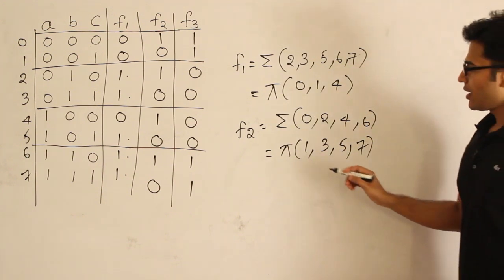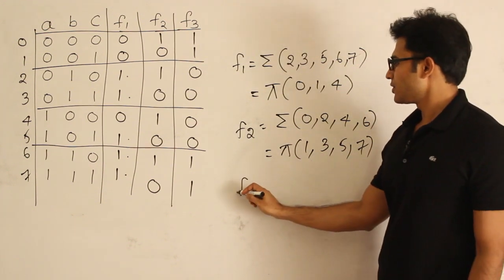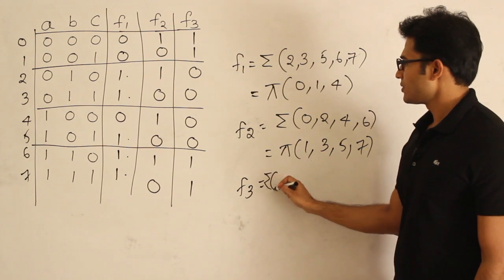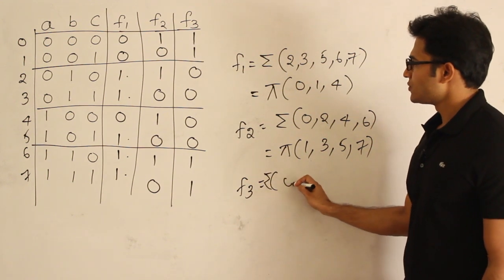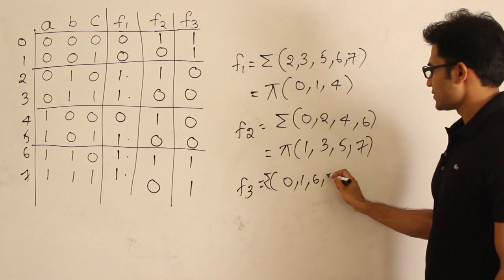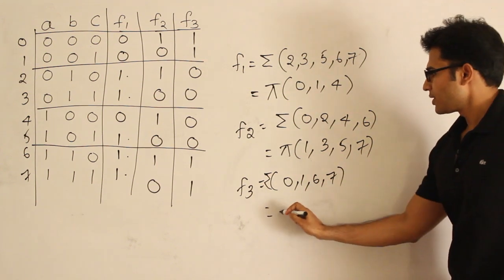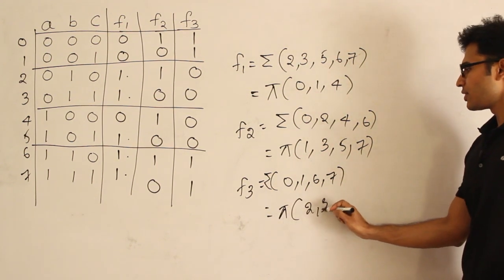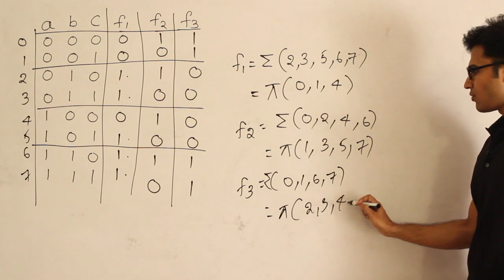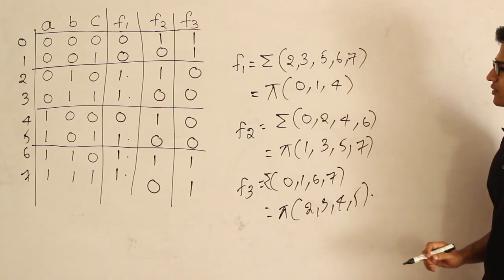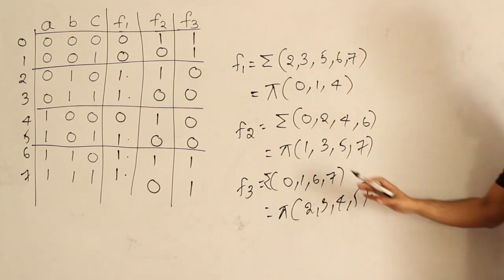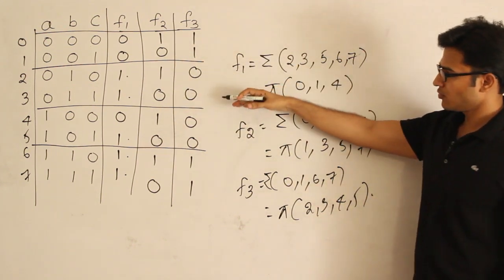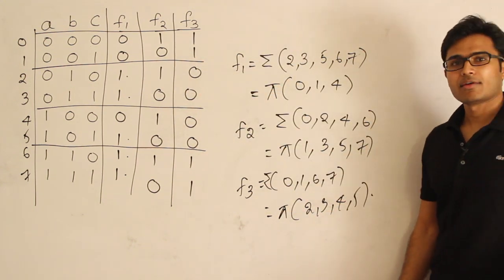What about f3? f3 as sigma is: the minterms are 0, 1, 6, 7. And pi — whatever is missing — is pi(2, 3, 4, 5). So this is how you represent every function: given a truth table, you can convert it into canonical forms like this.